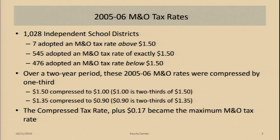If you were below $1.50 — for example, $1.35 — two-thirds of that is $0.90. So your district would have a $0.90 compressed tax rate. The state then added another $0.17 on top of that, so $1.17 was the maximum, replacing the old $1.50. That gave everybody at least $0.17 of new tax rate for meaningful discretion and to put capacity back in the system.